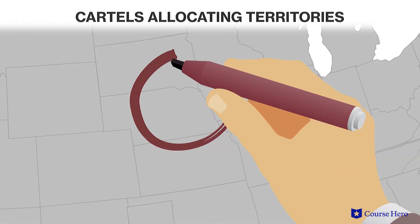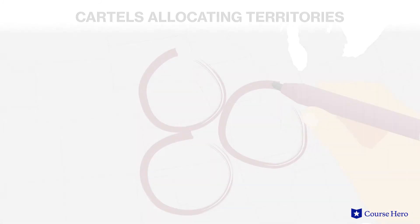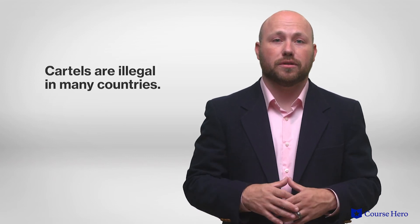A common type of cartel is one where producers allocate territories to each of their members so they become local monopolies. Cartels are illegal in many countries. To evade antitrust legislation, firms may form cartels in ways that are difficult to detect, such as setting common technical standards among producers to limit competition. International cartels agreed between national authorities may be tolerated even by other countries that ban cartels on their own soil, simply because they are too powerful to outlaw.